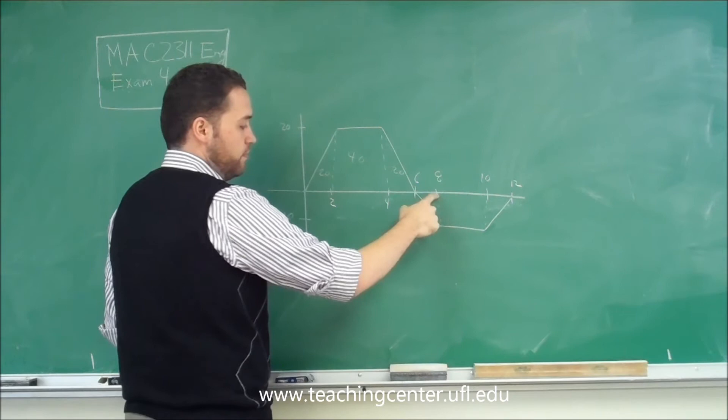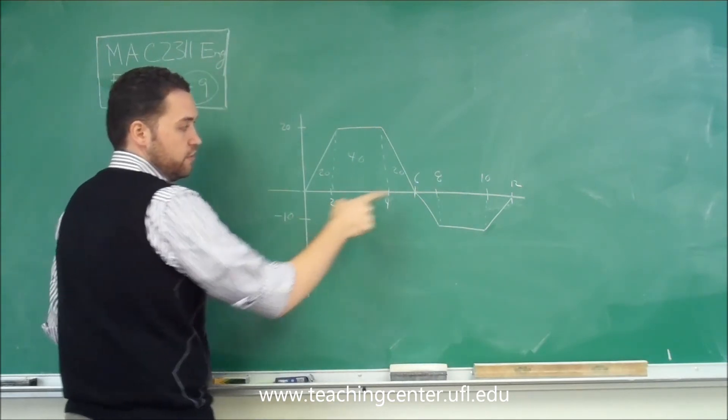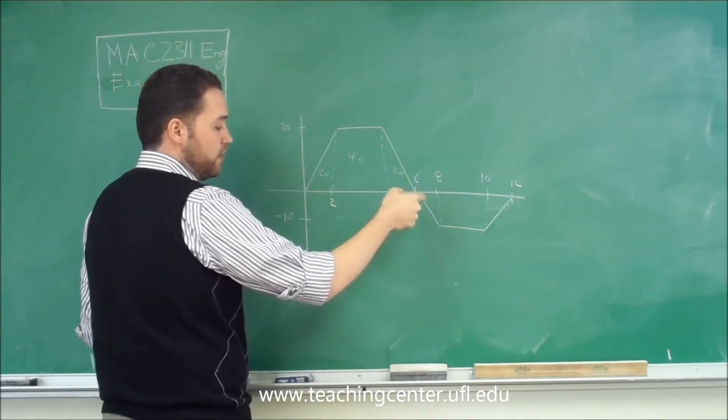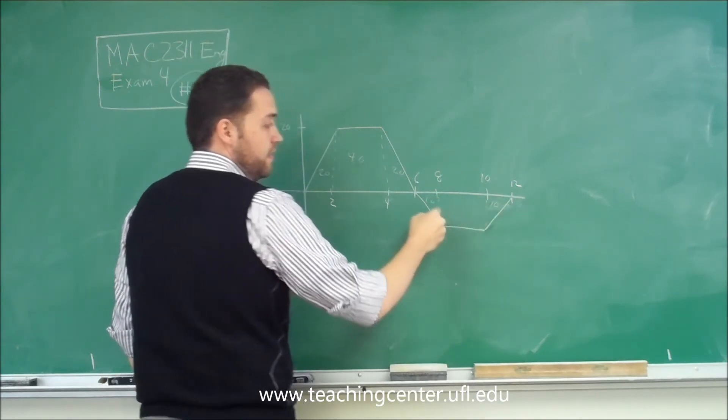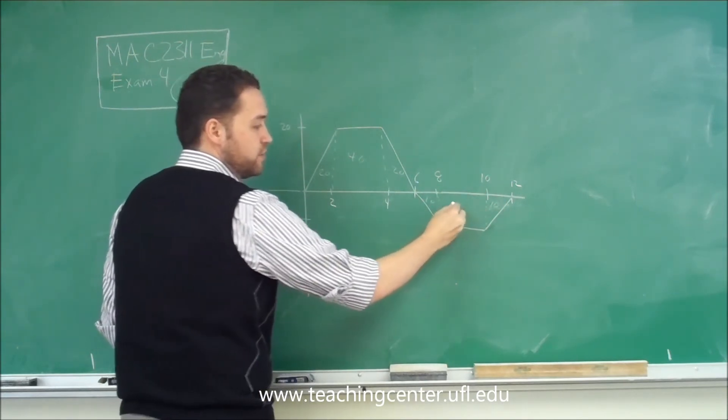Over here, you can see this is 2 by, and it goes down 10. So 2 times 1 half is 1 times 10, so that's going to give you 10. This would be 10 as well. And then this is just going to be 2 by 10, which gives you a 20.